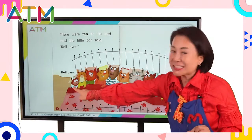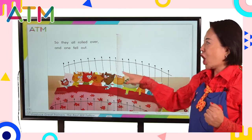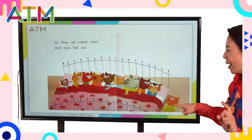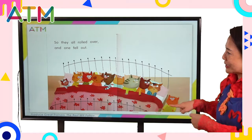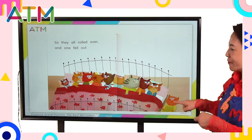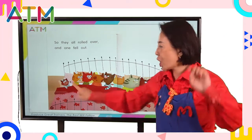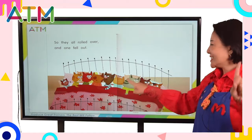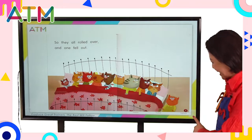The little cat said 'Roll over!' And they all rolled over, and one fell out of the bed — on the floor! So they all rolled over and one was on the floor. How many? Let's count together: one, two, four... eight, nine. Now we have nine little cats in the bed.